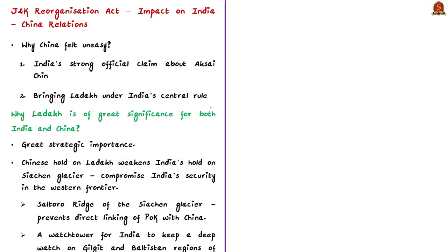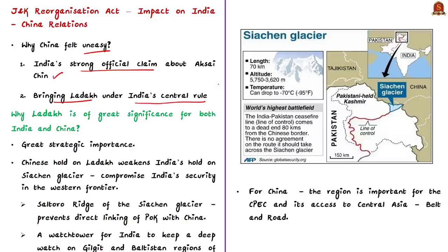Coming to China, the author discusses how China felt uneasy about India's decision of separating Ladakh from Kashmir, followed by statements from India's political leadership. The author cites two reasons for the discomfort of the Chinese side: one is India's strong official claim about Aksai Chin that has been under Chinese control, and the second is bringing Ladakh under India's central rule, which annoyed China since it considers Ladakh's borders to be disputed between India and China. The author notes a similarity between Pakistani and Chinese positions — both argue that India changed the status of Jammu and Kashmir whose borders are still being negotiated.